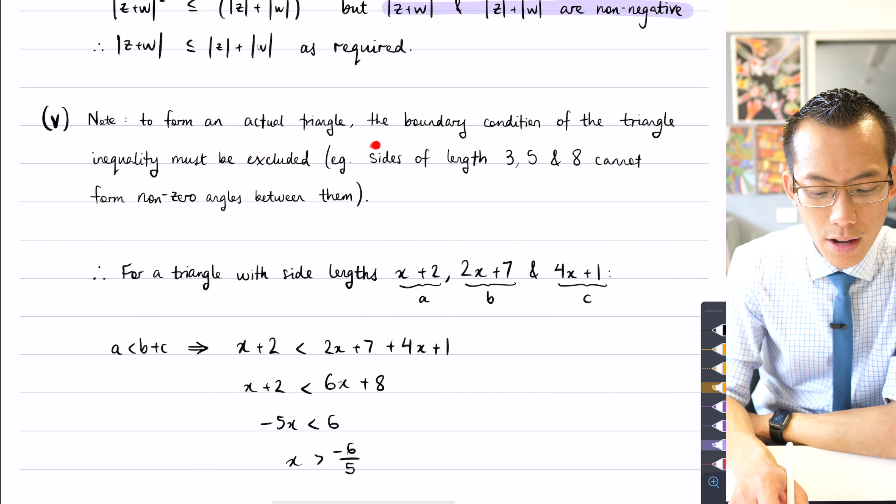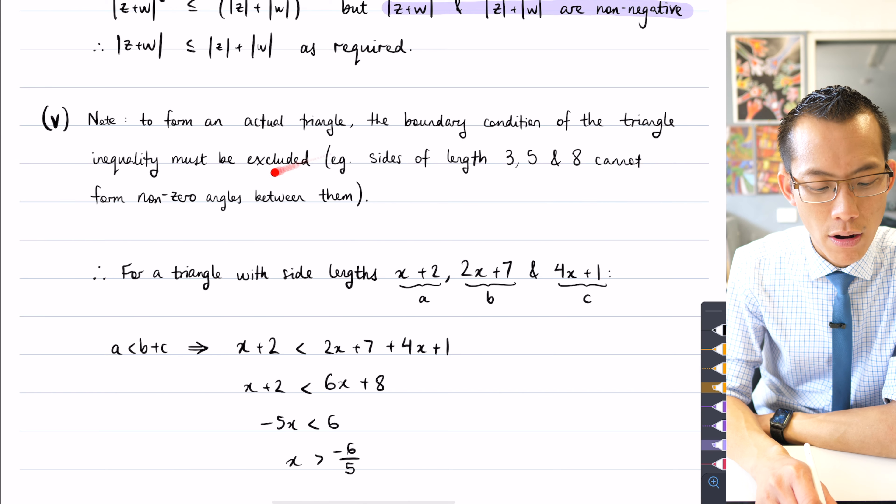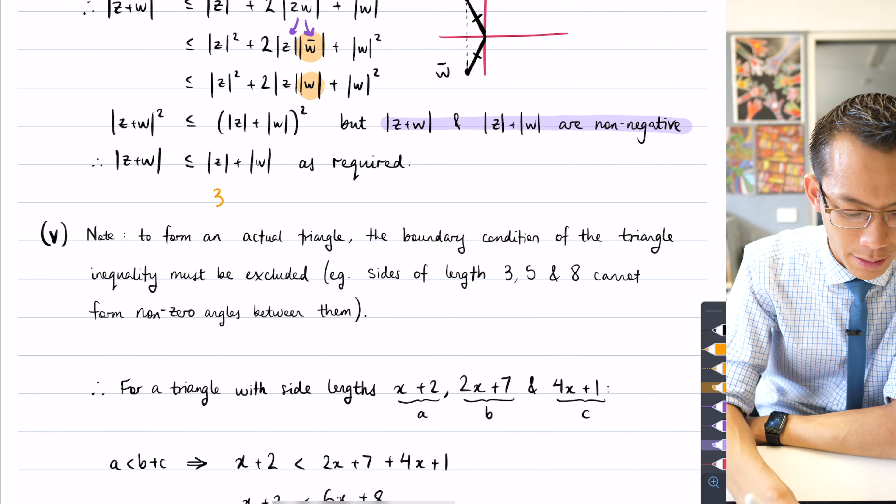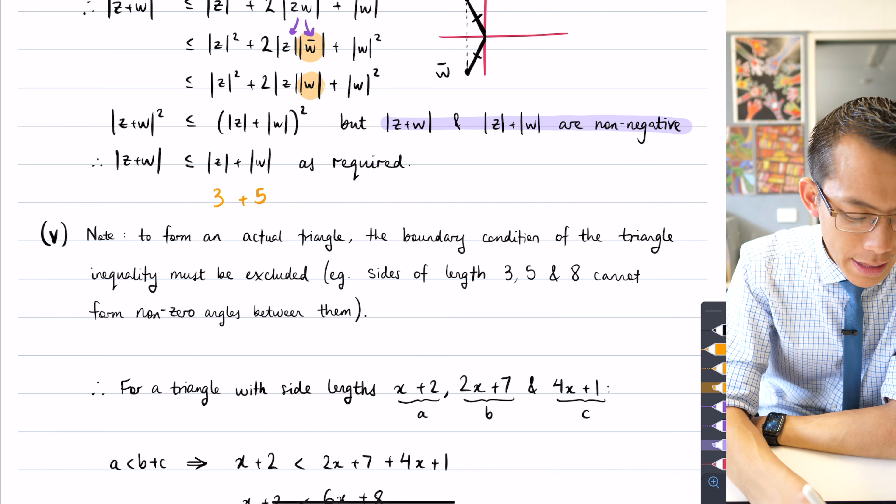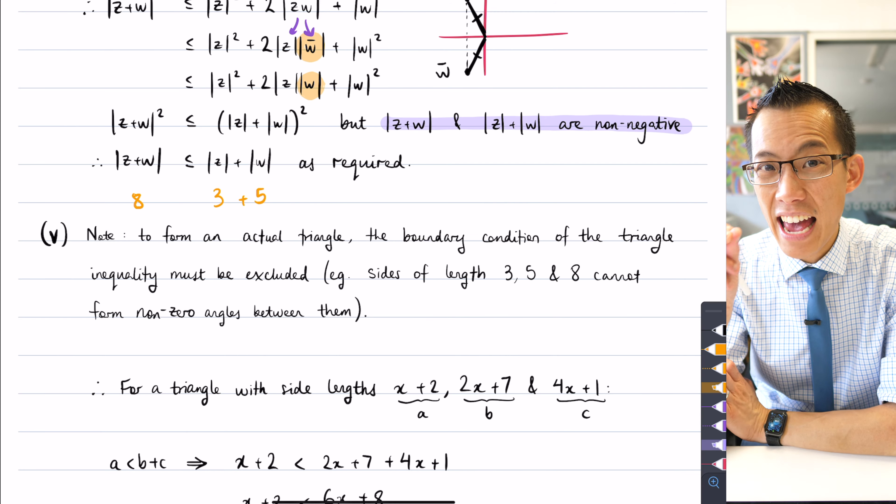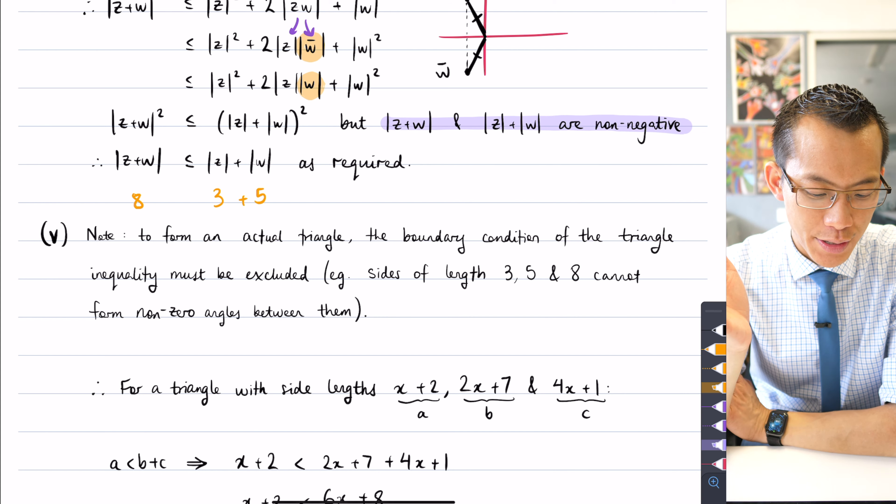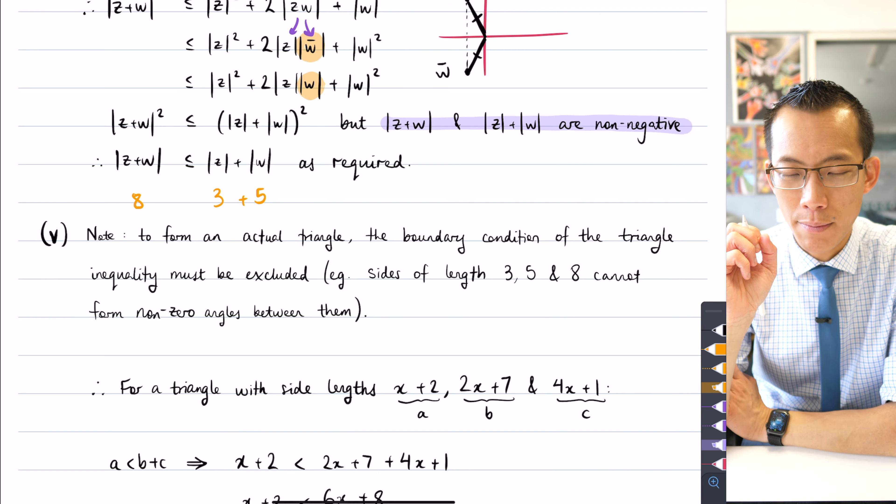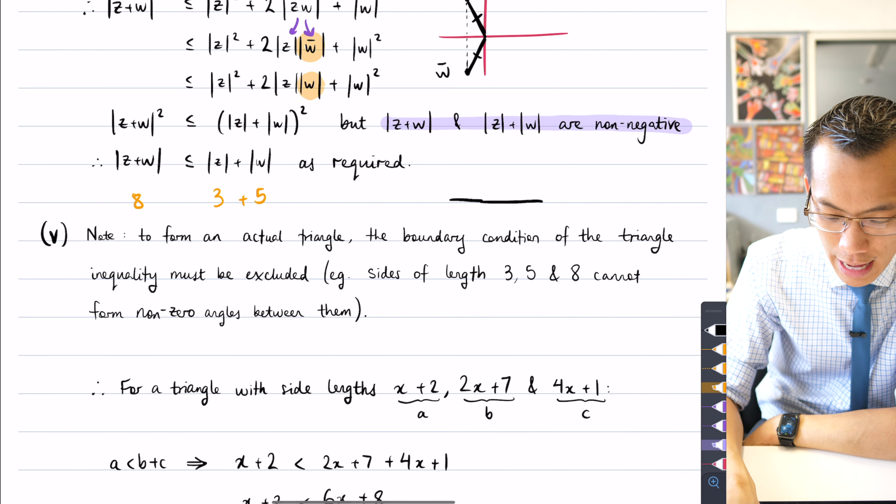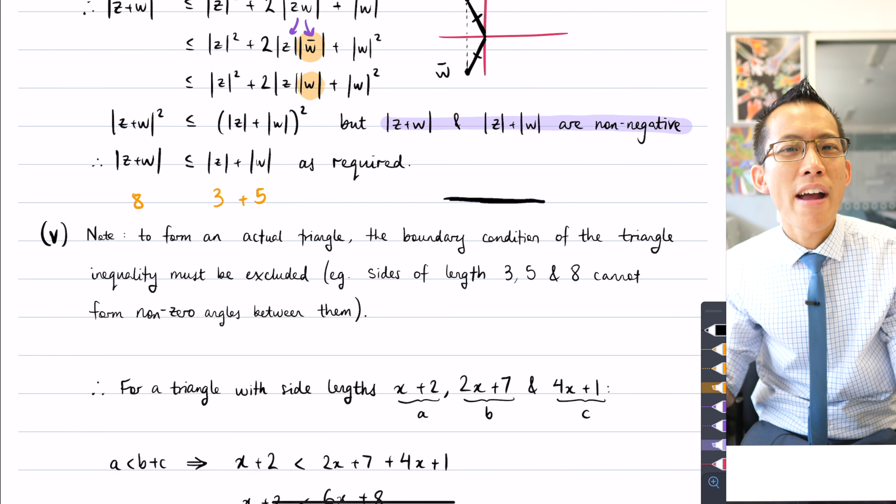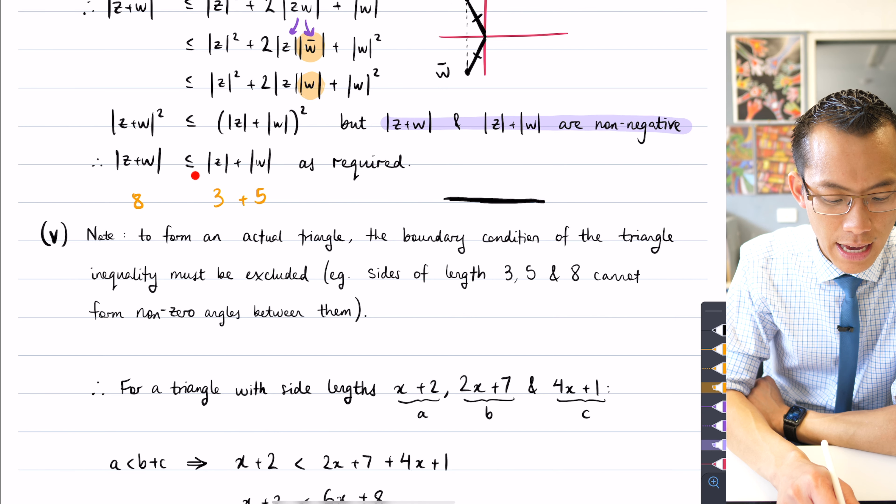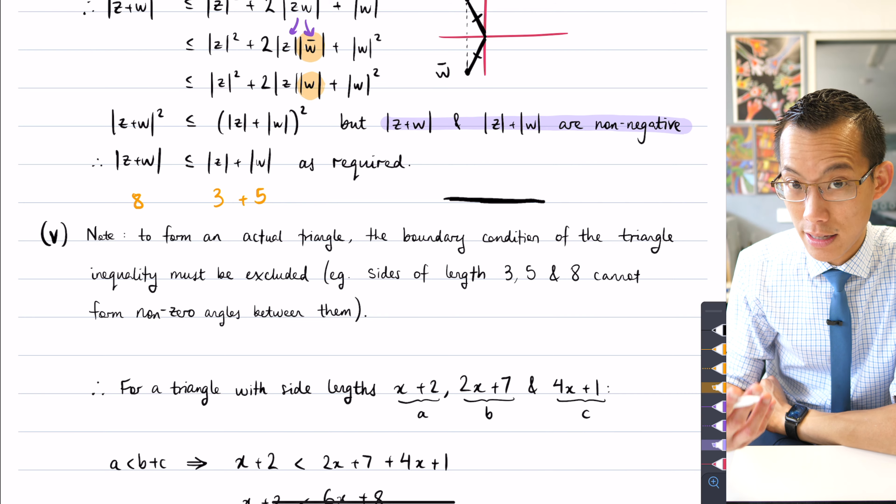To form an actual triangle, we actually have to exclude the boundary condition of the triangle inequality. If I gave you that example before of one side being 3 and the other side being 5, could that other side be 8? And the short answer is, in theory it could be, but practically speaking, to get an actual triangle, it can't exactly be equal to 8, because then you've got just a flat geometric object. There's no area to this thing, so it's not actually a triangle. So that's why here I say the boundary condition must be excluded, so instead of saying it's less than or equal to, I'm going to say it's just lesser than.